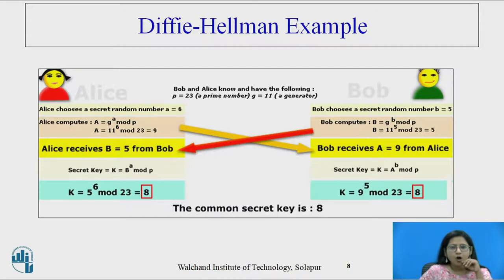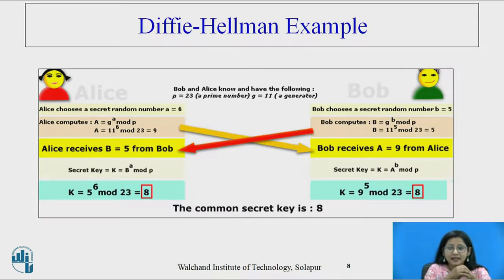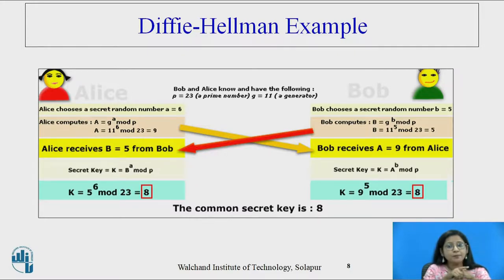Now take one example. Bob and Alice know the following: P = 23 and G = 11, where G is the generator and P is the prime number. Alice chooses a secret random number A = 6, and Bob chooses a secret random number B = 5. Alice computes her public key as G raised to A mod P, which equals 9. Bob computes his public key using G raised to B mod P. With their own private keys they calculate their public keys and then exchange them.